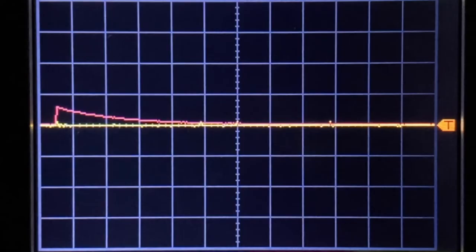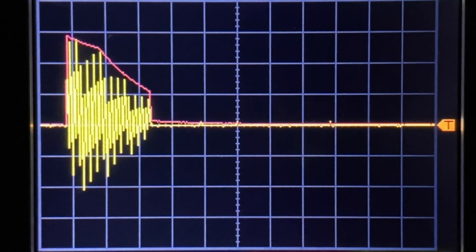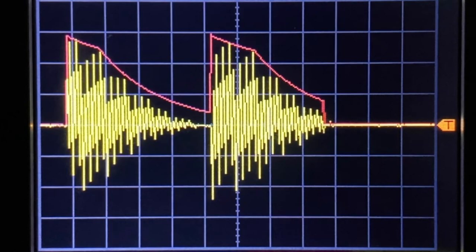In the case of the VCA, the audio wave carrier is being multiplied by the envelope modulator, and the result is the amplitude of the audio wave taking on the shape of the envelope.